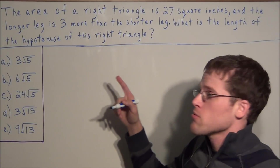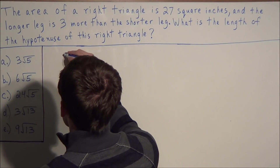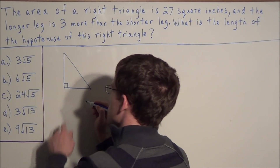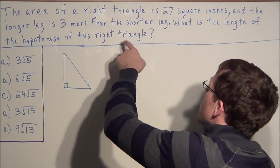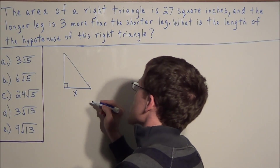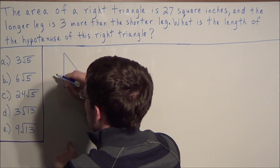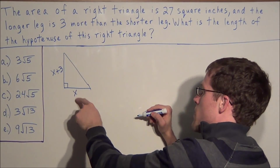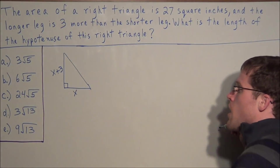To get started, since we don't have a picture the first thing we should do is draw a general right triangle. We draw the triangle and put a box symbol at the bottom to indicate the presence of a 90 degree angle. We're told the longer leg is three more than the shorter leg, so let's call the shorter leg x. That tells us we can represent the longer leg by x plus three, which represents three more than this leg.